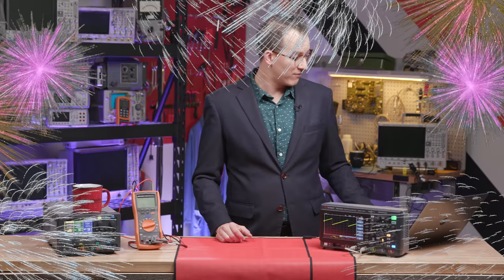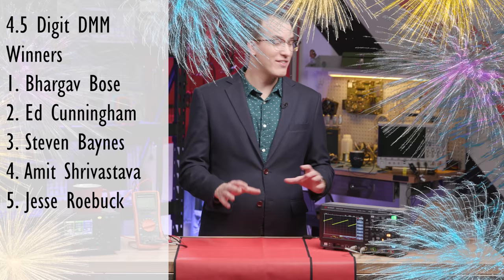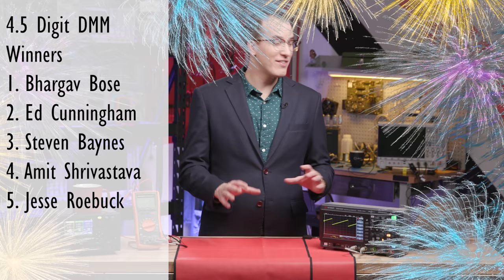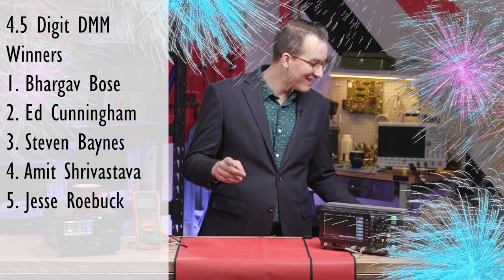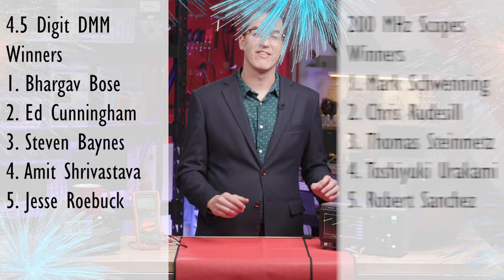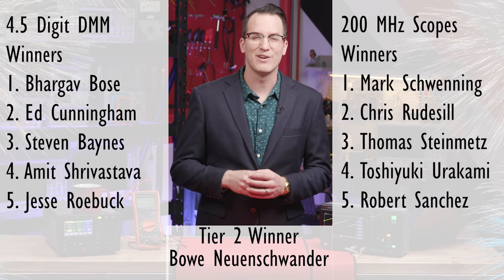Today's DMM winners are Bargov Bose, Ed Cunningham, Steven Baines, Amit Srivastava, and Jesse Robeck. Congratulations to those winners. The winners of the DSLX 1204G are Mark Schwenning, Chris Ridesil, Thomas Steinmetz, Toshiyuki Urakami, and Robert Sanchez. And our tier two prize winner is Bowie Nuenchwander. Congratulations to all our winners — we'll be in touch with you shortly.